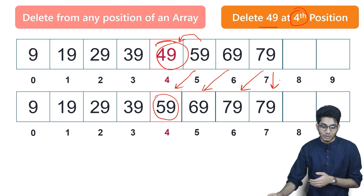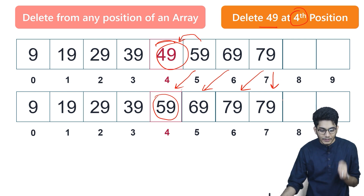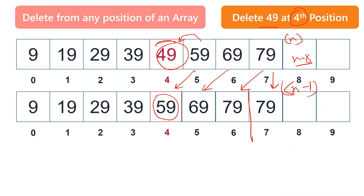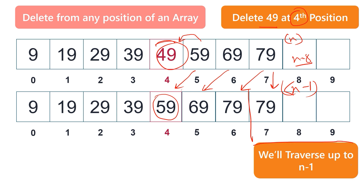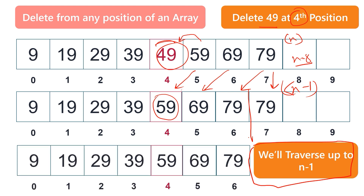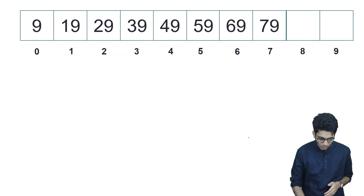So 59 came here, 69 came here, 79 came here, and we still have that 79 at the last position — but we don't need to worry about it. We will traverse up to n minus one. The final array will be 9, 19, 29, 39, 59, 69, and 79. At first we make a shift, then we traverse up to n minus one.